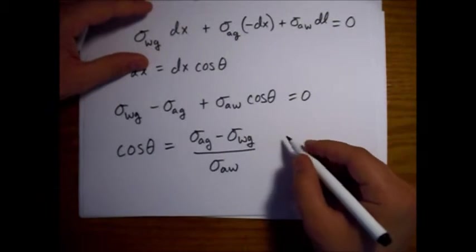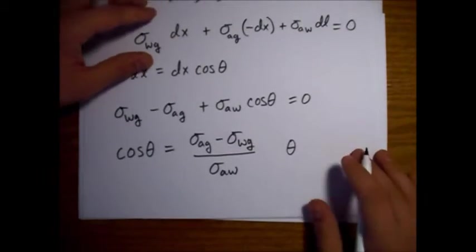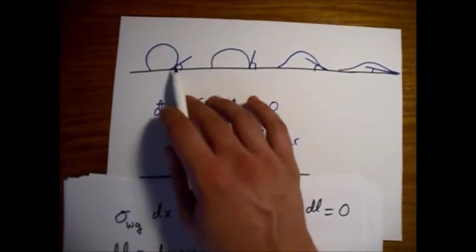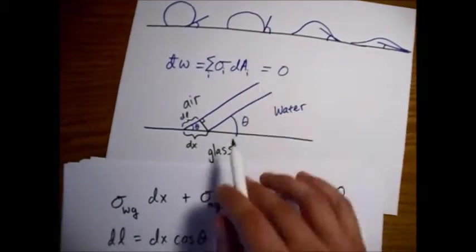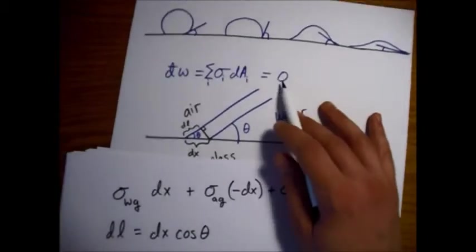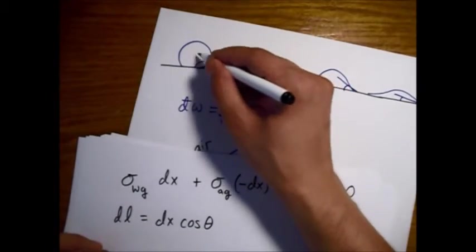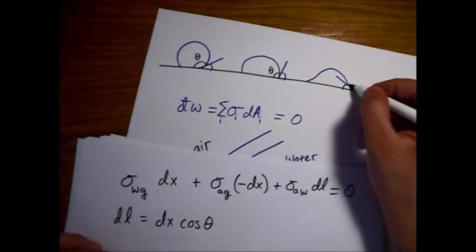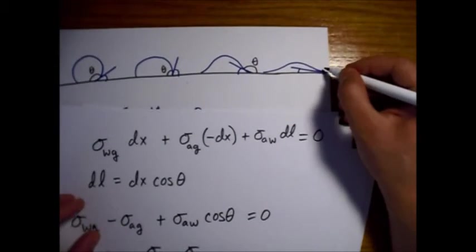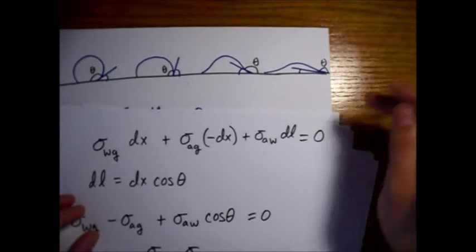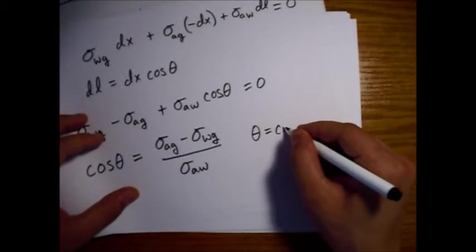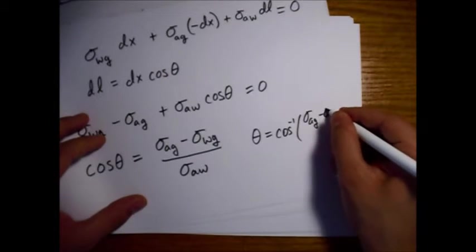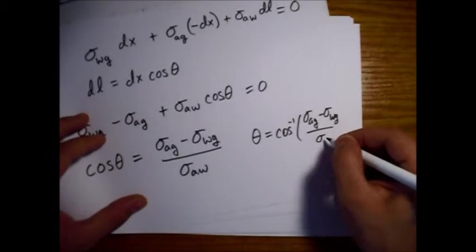So our theta, this angle that we're looking at, I guess what I drew here was drawn into the air. Here, this is drawn into the water, so theta would actually be these other angles, supplementary to the angles I drew before. Equal to inverse cosine sigma AG minus sigma WG over sigma AW.